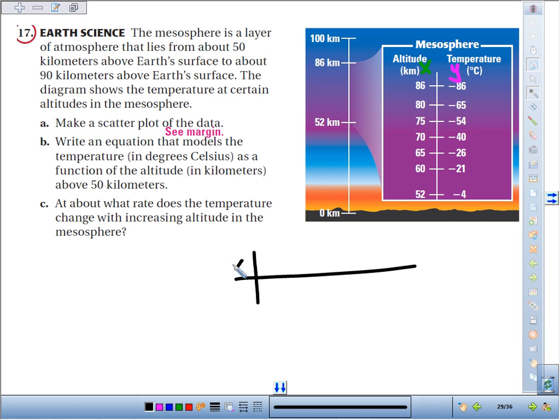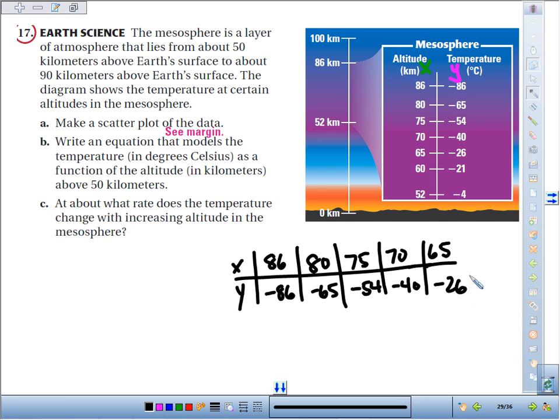Put it into a traditional table, we've got: 86 for our altitude, negative 86 for our temperature; 80, negative 65; 75, negative 54; 70 is negative 40; 65, we've got a temperature of negative 26 degrees Celsius; 60 is negative 21; and 52 kilometers above Earth's surface, negative 4 degrees Celsius.